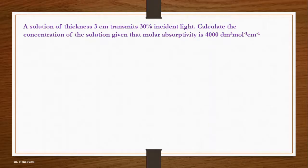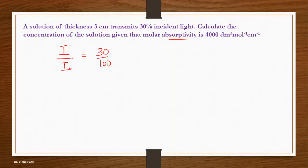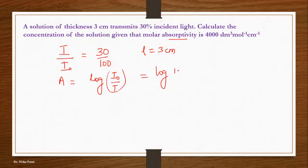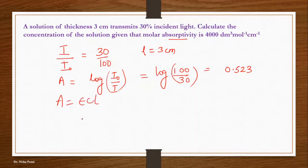The next question says: a solution of thickness 3 cm — meaning path length L = 3 cm — transmits 30% of incident light. Calculate the concentration given that the molar absorptivity is 4000. First, I/I₀ = 30%, so absorbance A = log(I₀/I) = log(100/30). When you calculate this you get A = 0.523. Now you know A = ε·C·L, and you need to find C, so C = A / (ε·L).